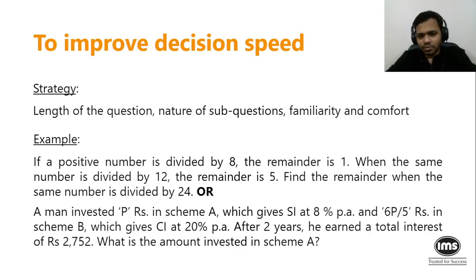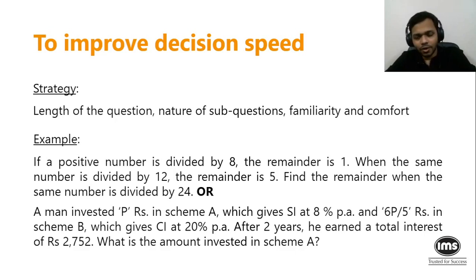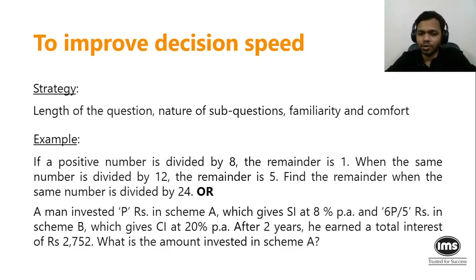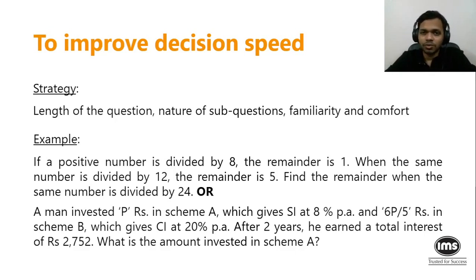Let me illustrate with two quant questions on screen. For the first: 'if a positive number is divided by 8' — you don't have to read the rest to figure out the area is numbers. For the second: 'a man invested p rupees in scheme A which gives SI' — you just need to stop there to figure out it is a simple interest/compound interest question. Which question you choose will vary from person to person based on your comfort level.